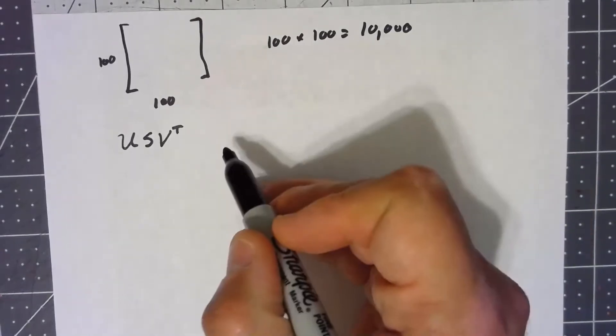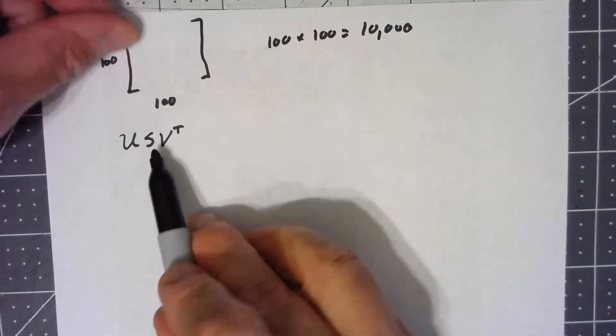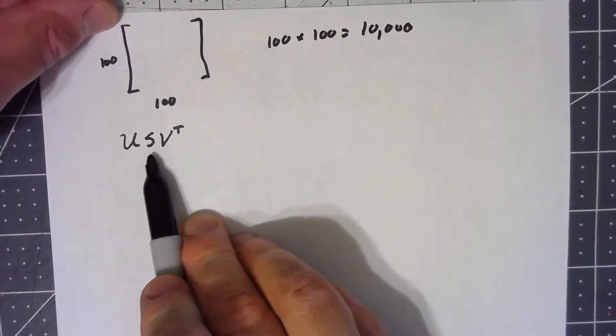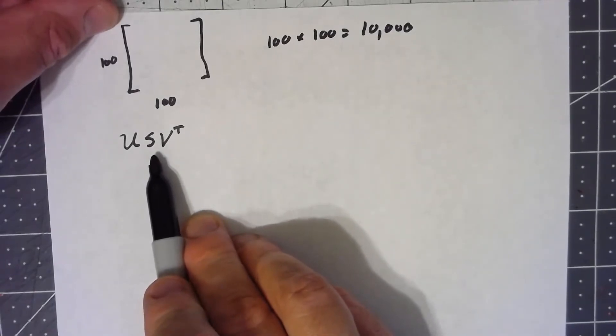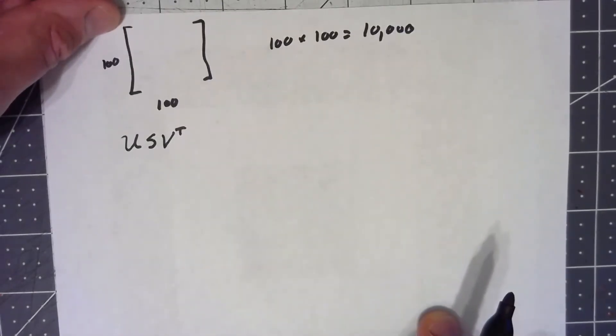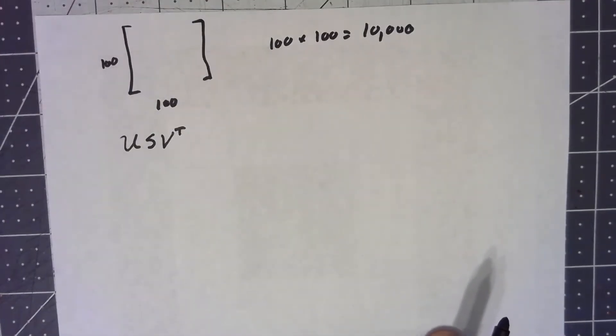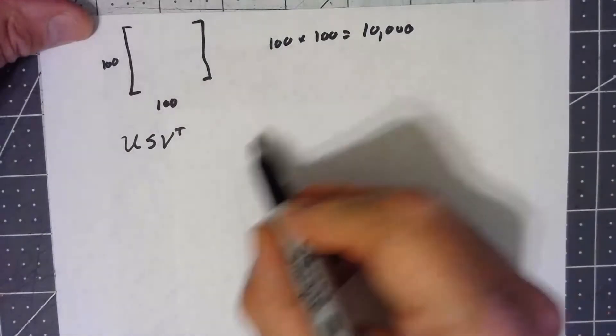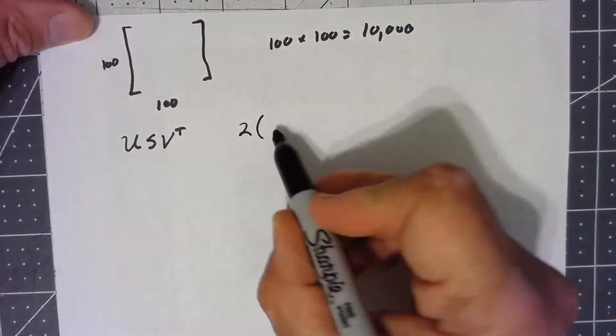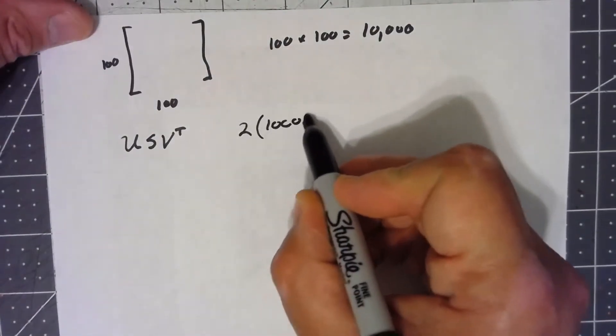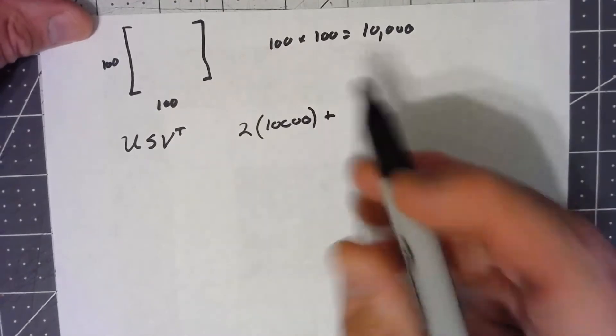So we're actually going to take twice as many entries for those. S is technically a 100 by 100 matrix, but because it's going to be just entries on the diagonal, we really only have 100 entries we need to store. So this would be 2 times 10,000 plus another 100 for 20,100.